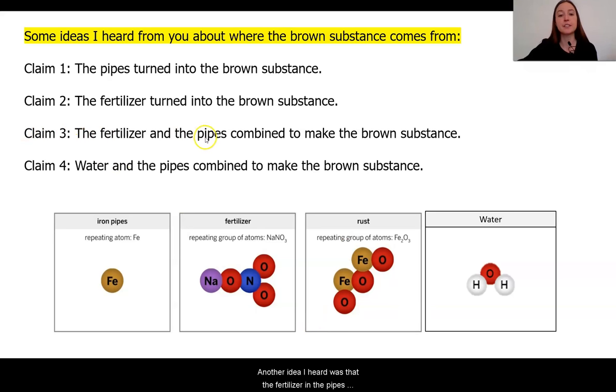Another idea I heard was that the fertilizer and the pipes combined together to make the brown substance. So students argued that they saw some of the atoms in the iron pipes and fertilizer and that they came together to make this rust.